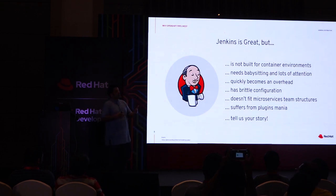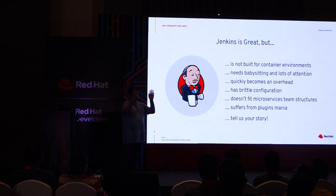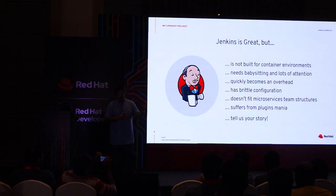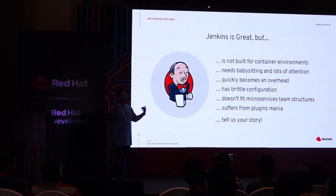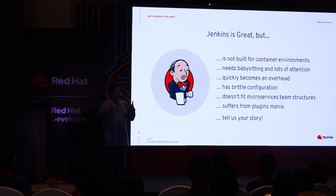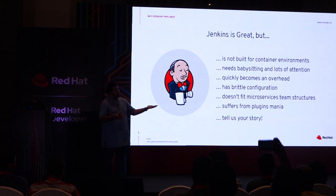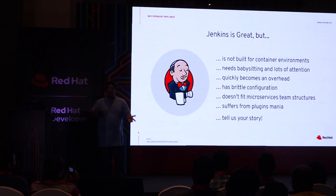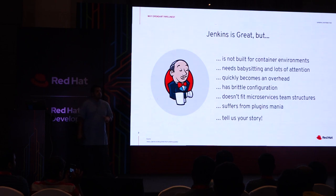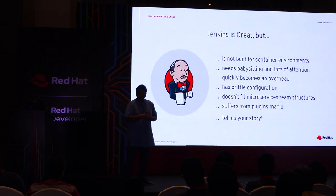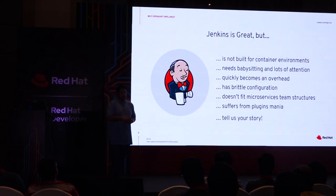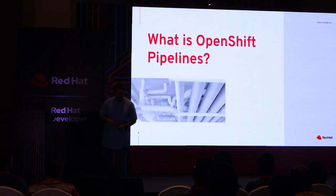Jenkins also needs a lot of attention from operators or build teams to keep watching what's happening, whether they need to add extra things. It also quickly becomes overhead because if you have so many jobs running, it will start to consume lots of resources and builds will get very slow. For container-native applications where you want to build and deploy Kubernetes applications and container images, it becomes really brittle and configuration becomes much more complex — what we call plugins mania. It's a great tool, but it needs to move to the container-native way, which is what OpenShift Pipelines does.